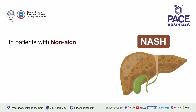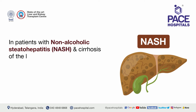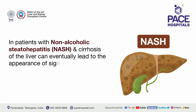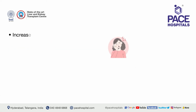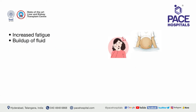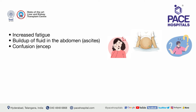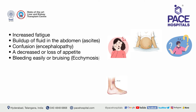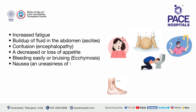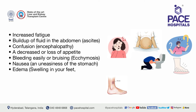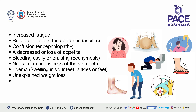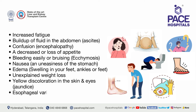Whereas in patients with non-alcoholic steatohepatitis, NASH, and cirrhosis of the liver can eventually lead to signs and symptoms such as increased fatigue, build-up of fluid in the abdomen (ascites), confusion (encephalopathy), decreased or loss of appetite, bleeding easily or bruising (ecchymosis), nausea, edema with swelling in the feet or ankles, unexplained weight loss, yellow discoloration of the skin and eyes (jaundice), and esophageal varices — enlarged or swollen veins in the esophagus that can cause vomiting blood or bloody/black tar-like stool.